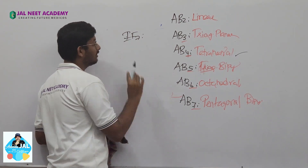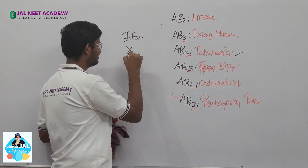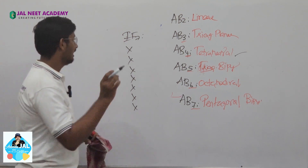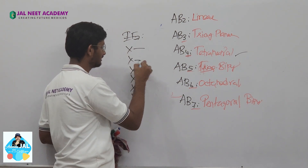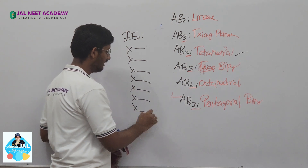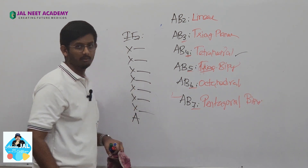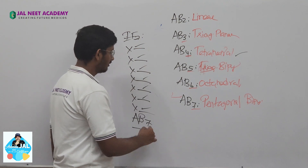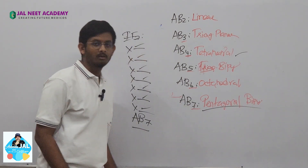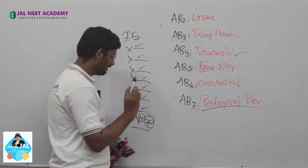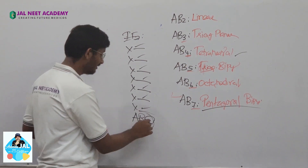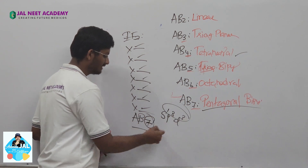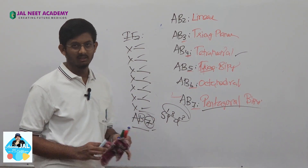Now for IF₇: iodine has 7 outer electrons and fluorine can make single bonds, so we have 7 bond pairs. So what is the shape of IF₇? Pentagonal bipyramidal. The hybridization number is 7, which gives sp³d³. So what is the hybridization of IF₇? It is sp³d³.